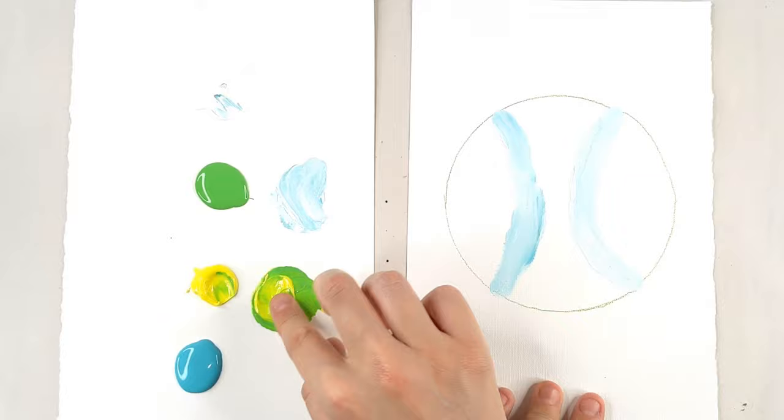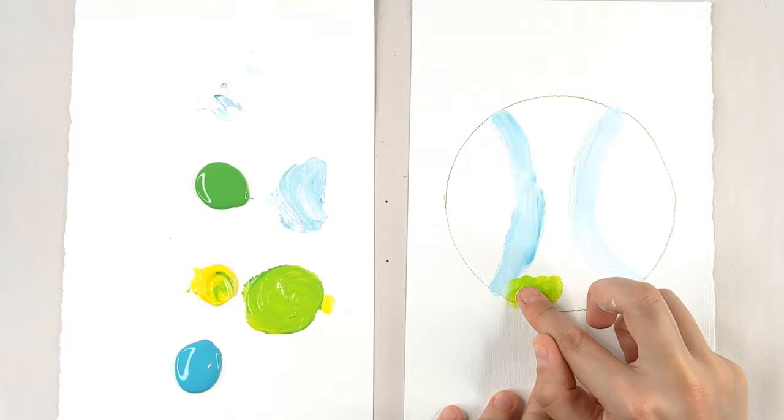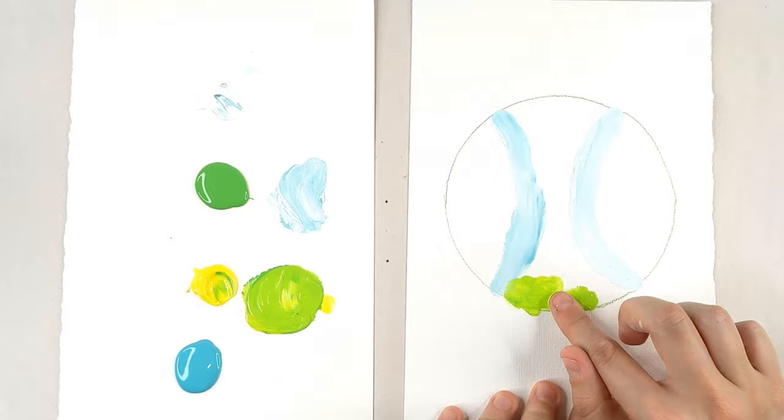And that is kind of the color of the tennis ball. And starting at the bottom, I'm just going to tap with my finger. I'm going to tap the color in, making sure that it's a little bit darker at the bottom.